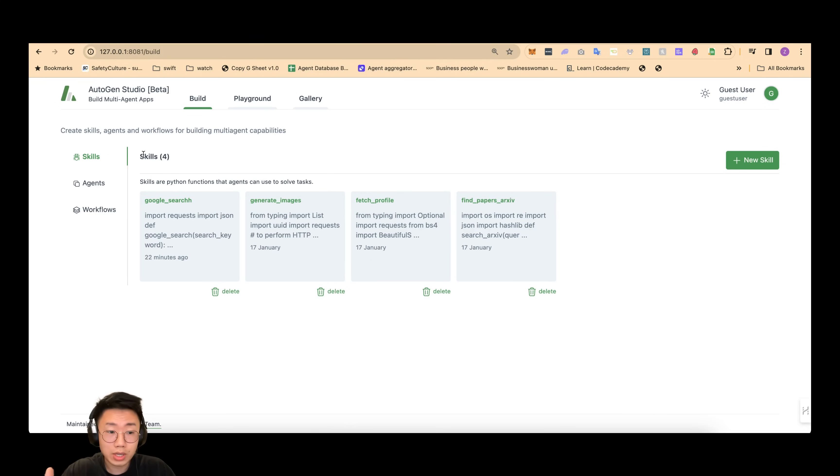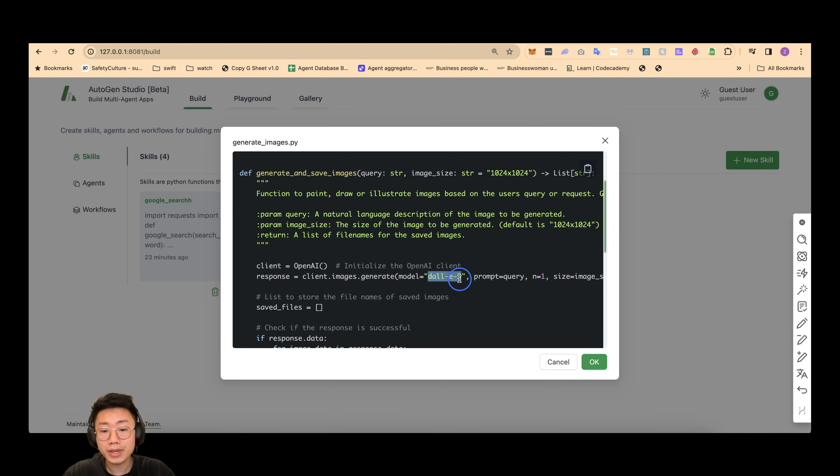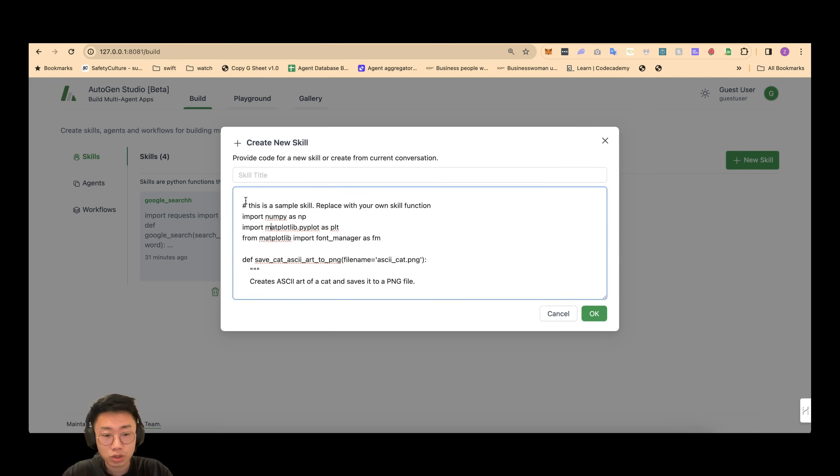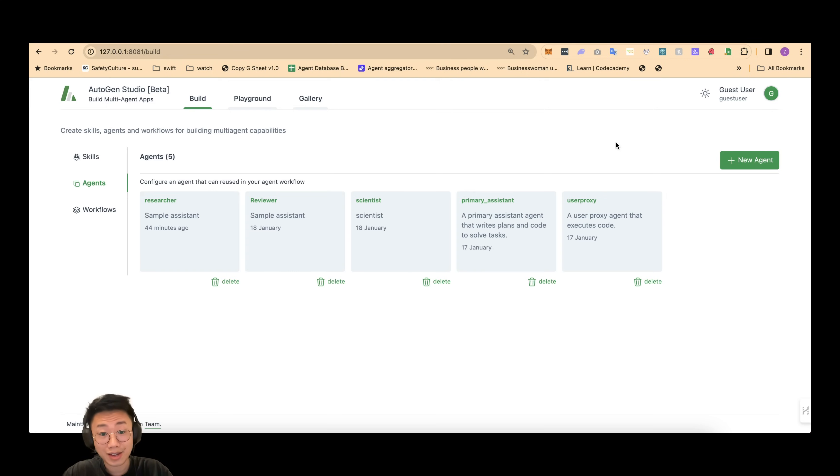All you need to do is just copy this link into your browser and you will see the interface like this. It has a couple of sections. Skills is basically a list of functions that agents can have access to like Google search. We can create custom functions. For example, for the agent to call OpenAI API to generate images. It is basically a function for function calling. And you can create any type of new skills by clicking on this new skill button and just putting the function code here.